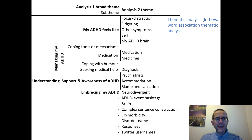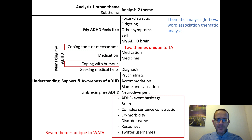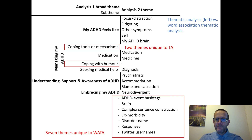This diagram compares the thematic analysis results on the left with the word association thematic analysis results on the right. You can see they overlap to a large extent but not completely. There were two themes found only by the thematic analysis — coping tools and mechanisms, and coping with humour — and seven themes found only by the word association thematic analysis. So the two different analyses give partly overlapping but partly different results.